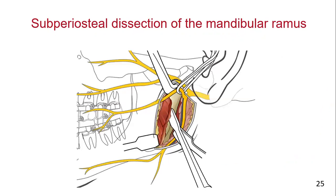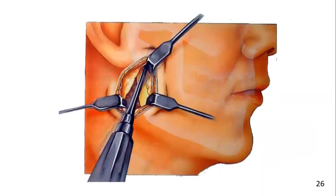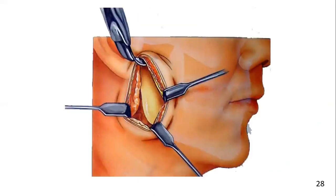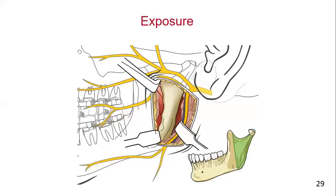A periosteal elevator is used to strip the masseter muscle from the ramus. Further dissection superiorly along the posterior border exposes the condylar process. The periosteal elevator is used to strip the muscle fibers from the top to the bottom of the ramus. A sigmoid notch retractor — with its curved flange inserted into the sigmoid notch — retracts the masseter muscle, providing exposure of the posterior ramus. The sigmoid notch retractor elevates the masseter muscle, parotid, and superficial tissues. Here is another illustration of the amount of exposure obtained during this approach.